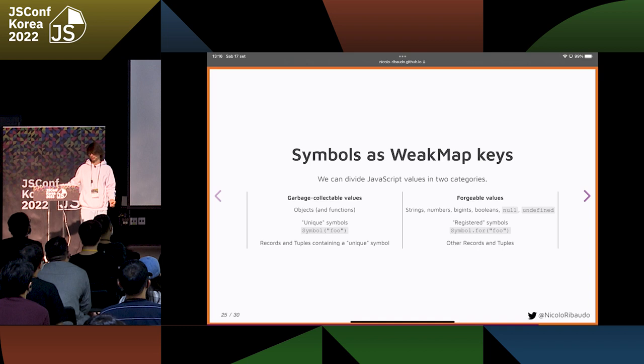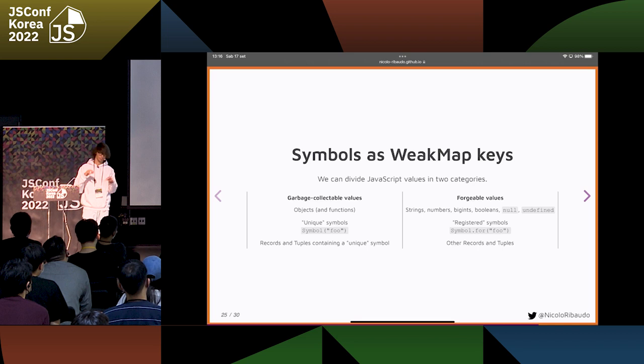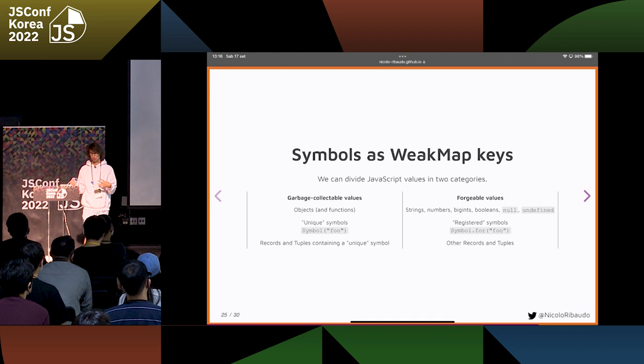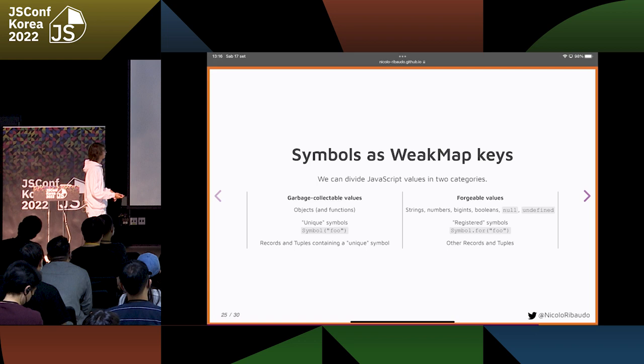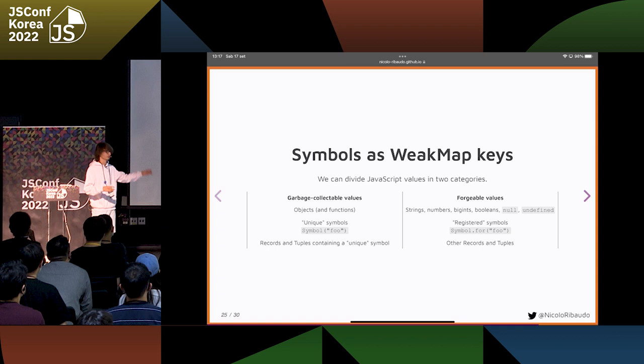On the other side, we have registered symbols, which are symbols that are not unique. You can recreate the same symbol every time by giving the Symbol function the same description — it's kind of like Symbol.iterator, which you can reuse many times. And with this proposal, we also have records and tuples, which are kind of on both sides. A record that contains a symbol you cannot recreate can be garbage collected, because if you don't have the symbol anymore you cannot recreate the same record. While a record that contains only strings is forgeable, because you can just recreate the same strings and put them together.